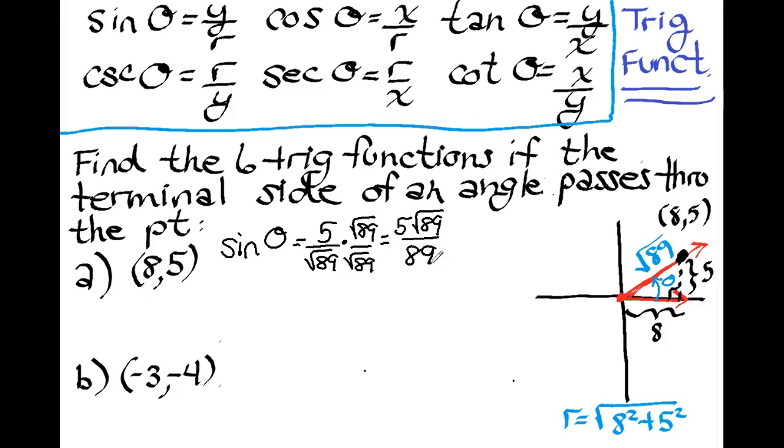So we're going to do that for the other five functions. I've got cosine is going to be adjacent over hypotenuse. And when I rationalize that, that's going to be 8 radical 89 over 89. Tangent is going to be opposite over adjacent or y over x. So that is 5 over 8.